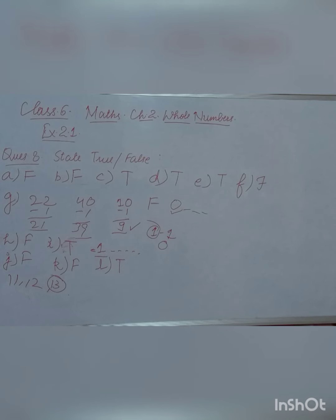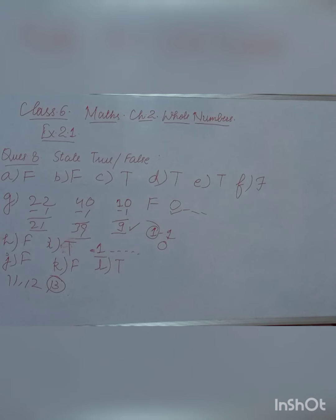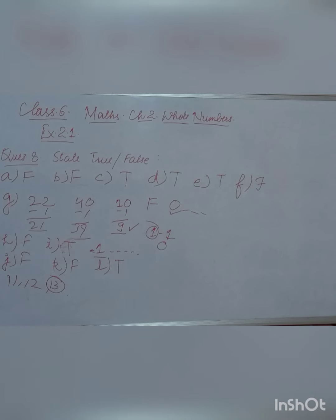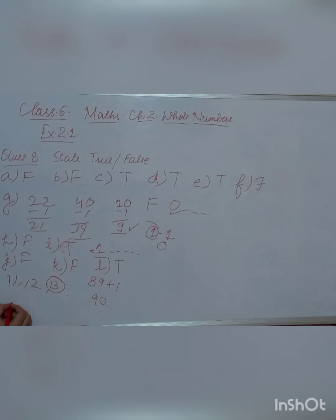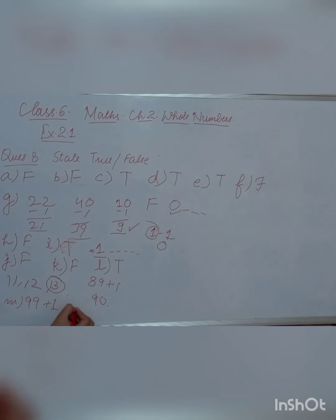The M part says: 'The successor of a 2-digit number is always a 2-digit number.' That is totally wrong. Most 2-digit numbers do give 2-digit successors — for example, 89 plus 1 equals 90, which is still 2-digit. But if you take 99 plus 1, you get 100, which is a 3-digit number. So the successor of a 2-digit number is not always a 2-digit number. Therefore this statement is false.